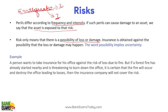If a light earthquake comes, it's possible your building won't be affected. But if a very big earthquake comes, the building may collapse. So the word 'possibility' implies uncertainty. There is an uncertainty, and insurance covers you against that uncertainty.